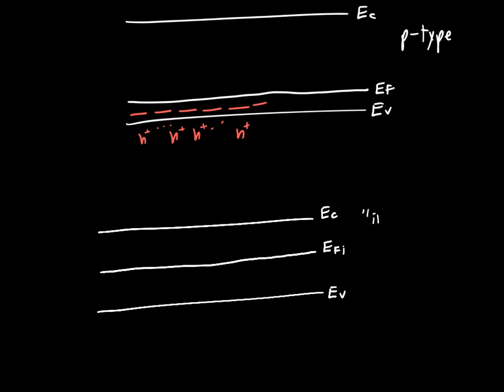And this is often called EFI, or the intrinsic Fermi level. So the intrinsic refers to the undoped semiconductor. And a lot of times in most of the future band diagrams I draw, I'll draw this as a dotted line, just to serve as a reference for where the midpoint is. The intrinsic Fermi level isn't exactly at the midpoint, but it's pretty close.